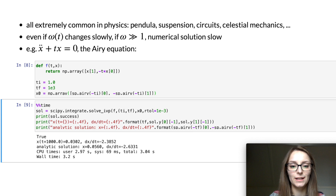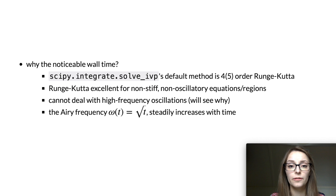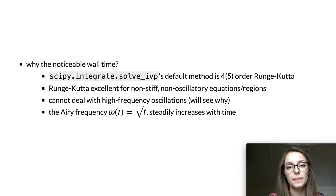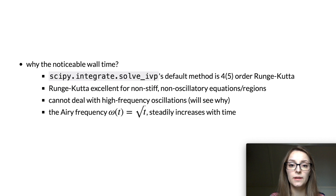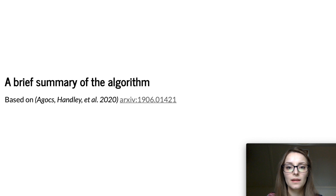But why did this happen? The answer lies with the method that scipy.integrate.solve_ivp defaults to, which is a fourth-fifth order Runge-Kutta method. Runge-Kutta is great for exploratory analysis when you don't know the global behavior of the solution, and also for non-stiff equations or solutions that don't oscillate too much. But it will struggle with the Airy equation because it is being applied outside of its range of validity. This is a general property among conventional methods — they struggle to trace the oscillations. However, this doesn't make any of these methods less amazing, and in fact Runge-Kutta plays a crucial role in the algorithm underlying Pyoscode.